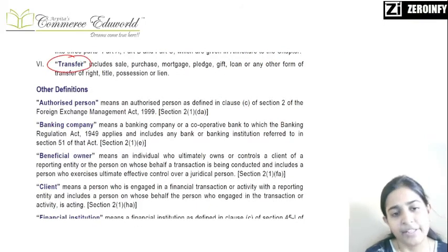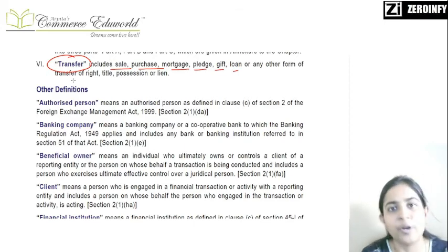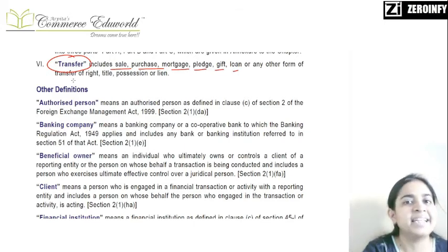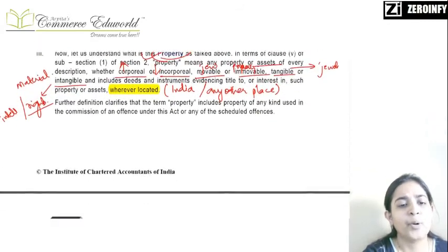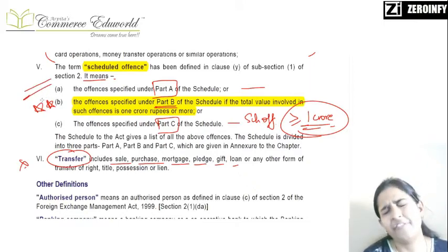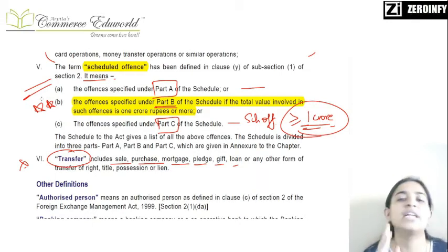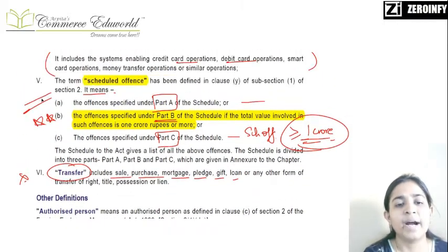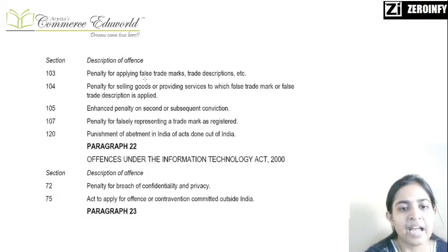Next is the definition of transfer, which will be used subsequently. It involves any sale, purchase, mortgage, pledge, gift, loan, or any other form where we are transferring either possession, right, or ownership of an asset. Wherever ownership or possession gets transferred, it is treated as a transfer. The most important definitions here are the first five - make sure you go through these definitions. Before moving ahead, let me show you the scheduled offense at the end of the chapter.